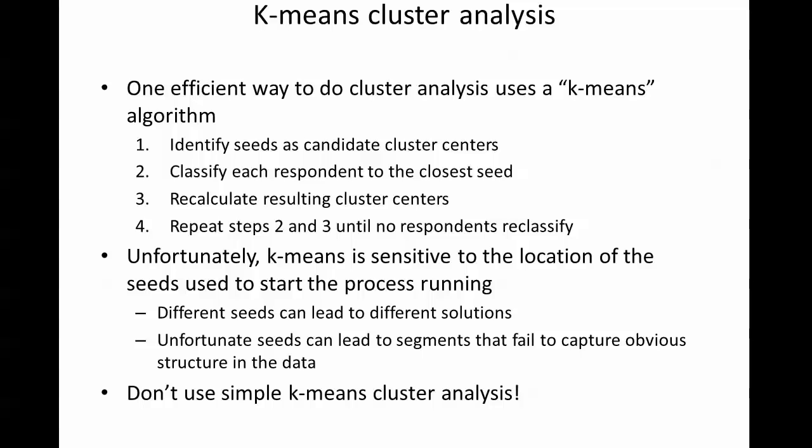One way of doing cluster analysis is called k-means cluster analysis, and it's a really efficient way of doing lots of cluster analyses quickly so that we can look at a lot of different candidate solutions. The algorithm identifies an initial set of seeds — so if we want a five-segment solution, it identifies five different seeds called candidate cluster centers or centroids. In step two, it takes each individual respondent and assigns them to the closest seed. Then it recalculates the center of each group to get new candidate cluster centers, and repeats until no respondents reclassify into new segments.